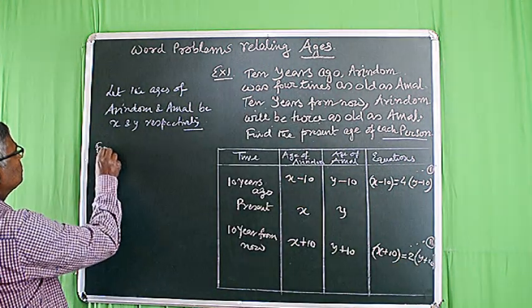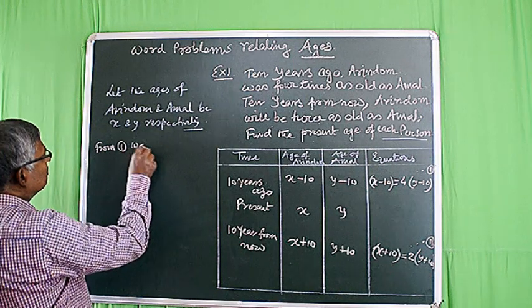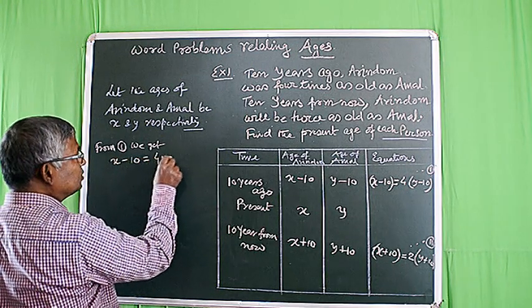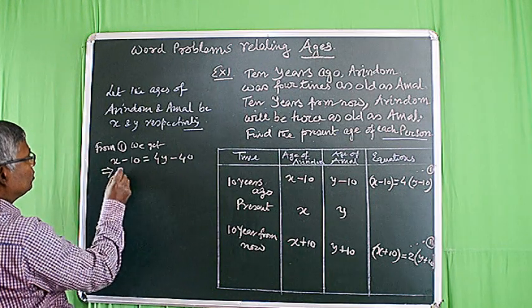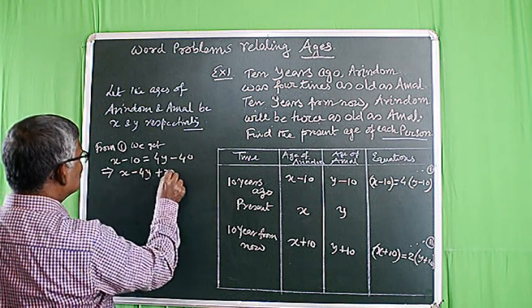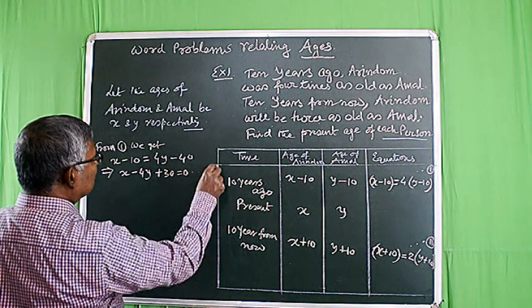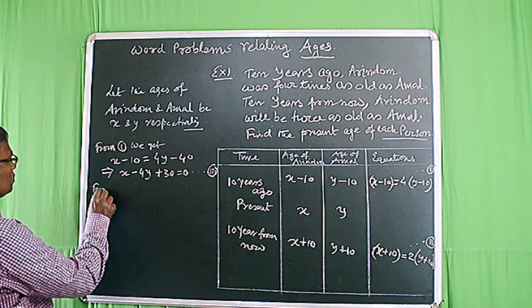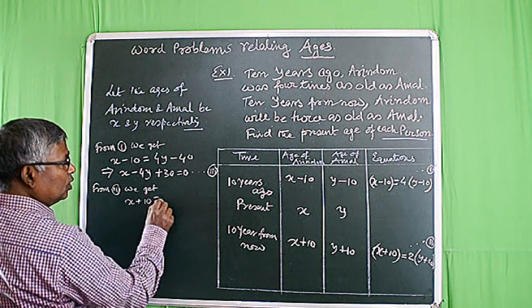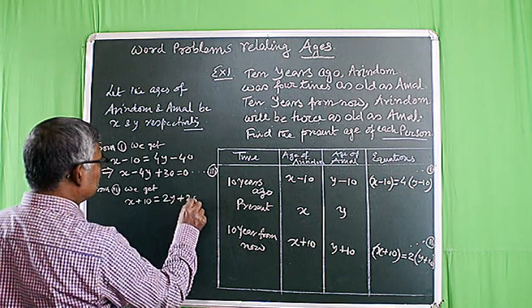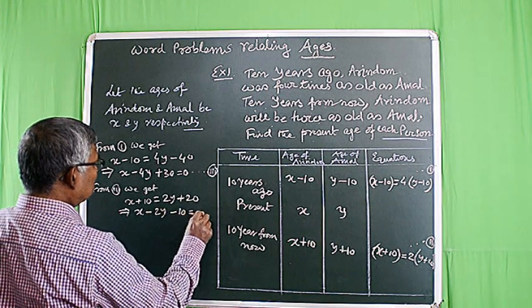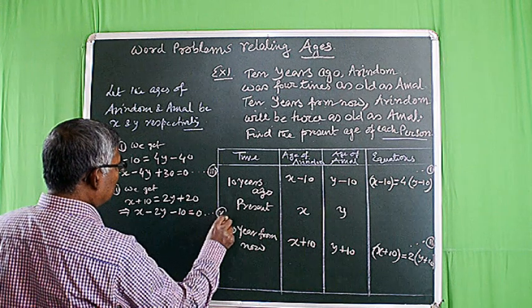From equation 1, we get X minus 10 equal to 4Y minus 40, which implies X minus 4Y plus 30 equal to 0. Suppose it is equation number 3. From equation 2, we get X plus 10 equal to 2Y plus 20, which implies X minus 2Y minus 10 equal to 0. Suppose it is equation number 4.